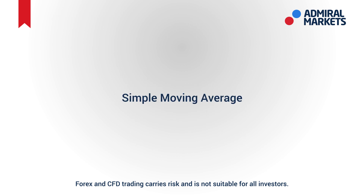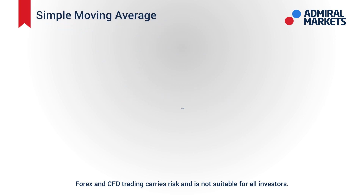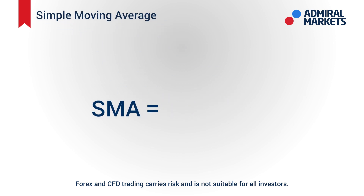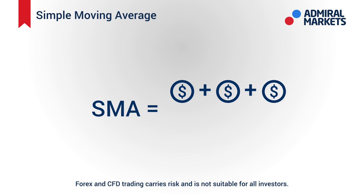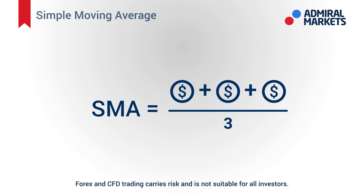The Simple Moving Average formula is calculated by taking the average closing price of a security over the periods of time you desire, and then you divide the total of the closing prices by the number of periods.